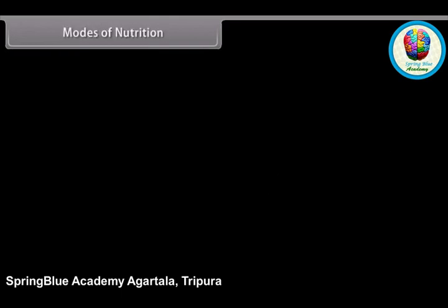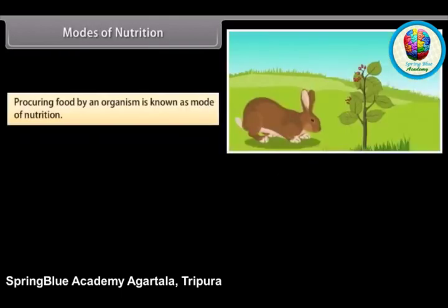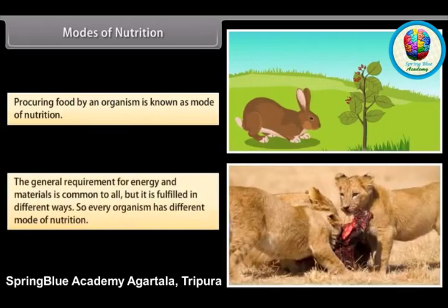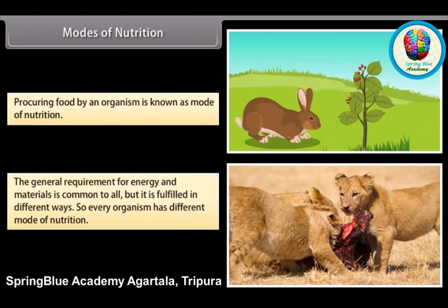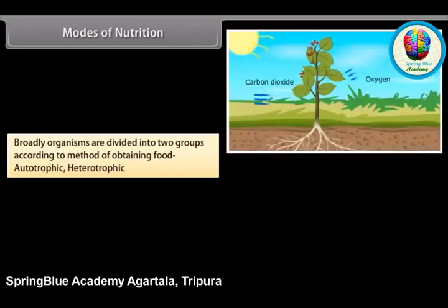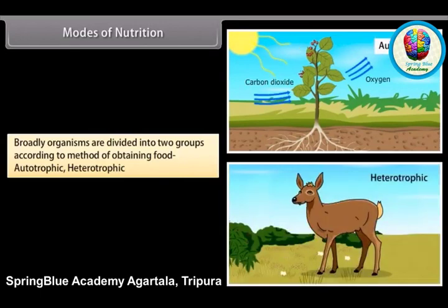Procuring food by an organism is known as its mode of nutrition. The general requirement for energy and materials is common to all organisms, but it is fulfilled in different ways, so every organism has a different mode of nutrition. Broadly, organisms are divided into two groups according to their method of obtaining food: autotrophic and heterotrophic.